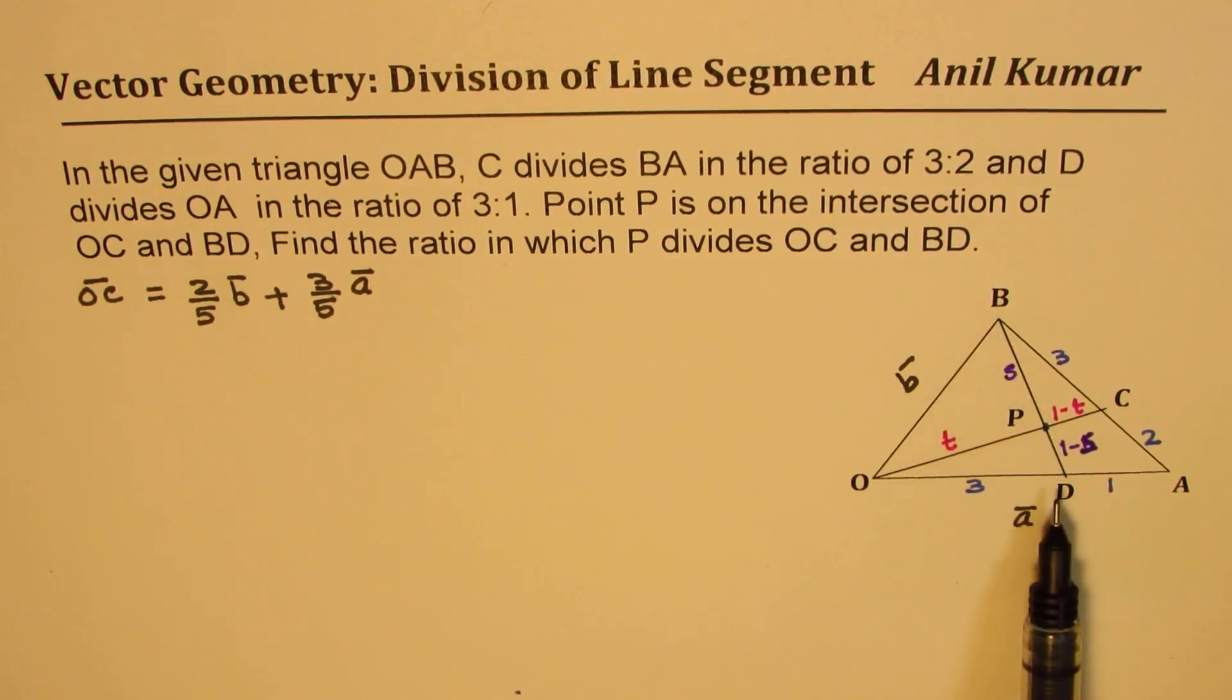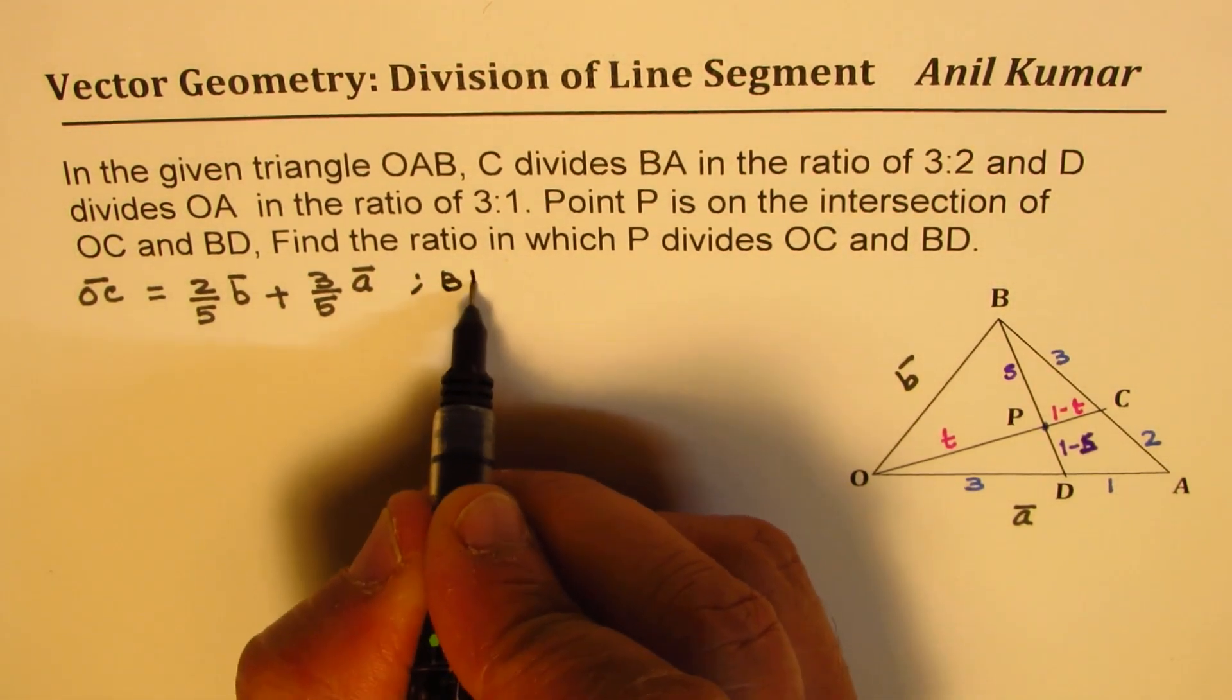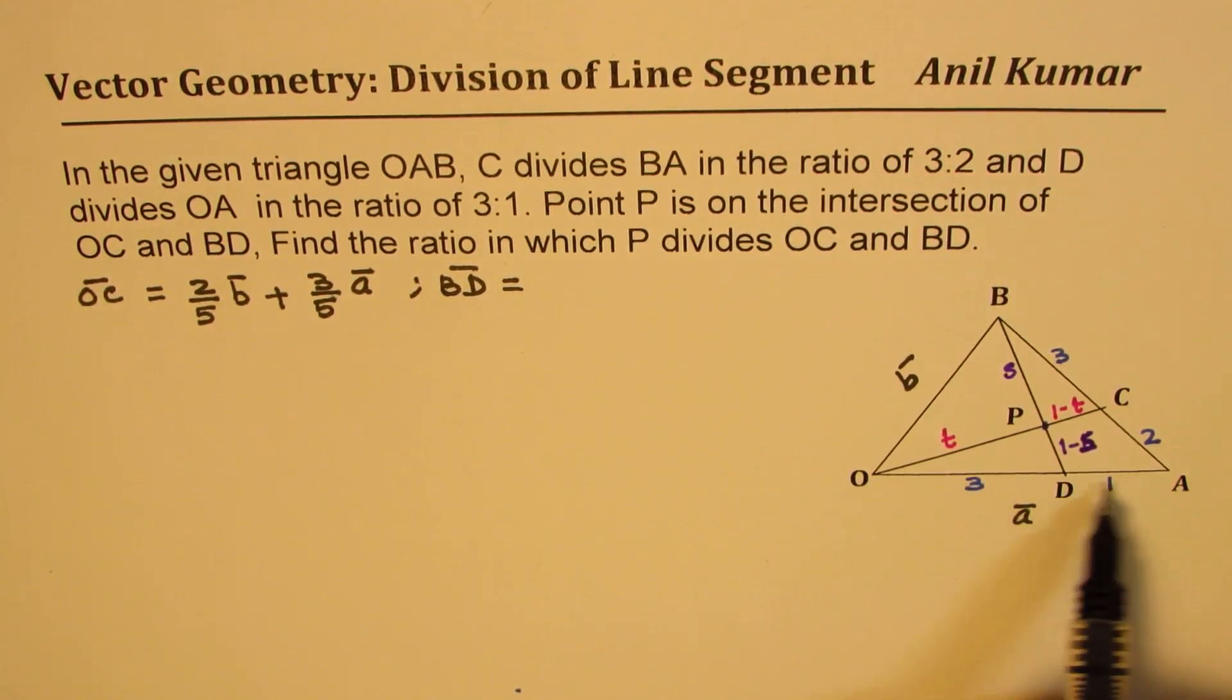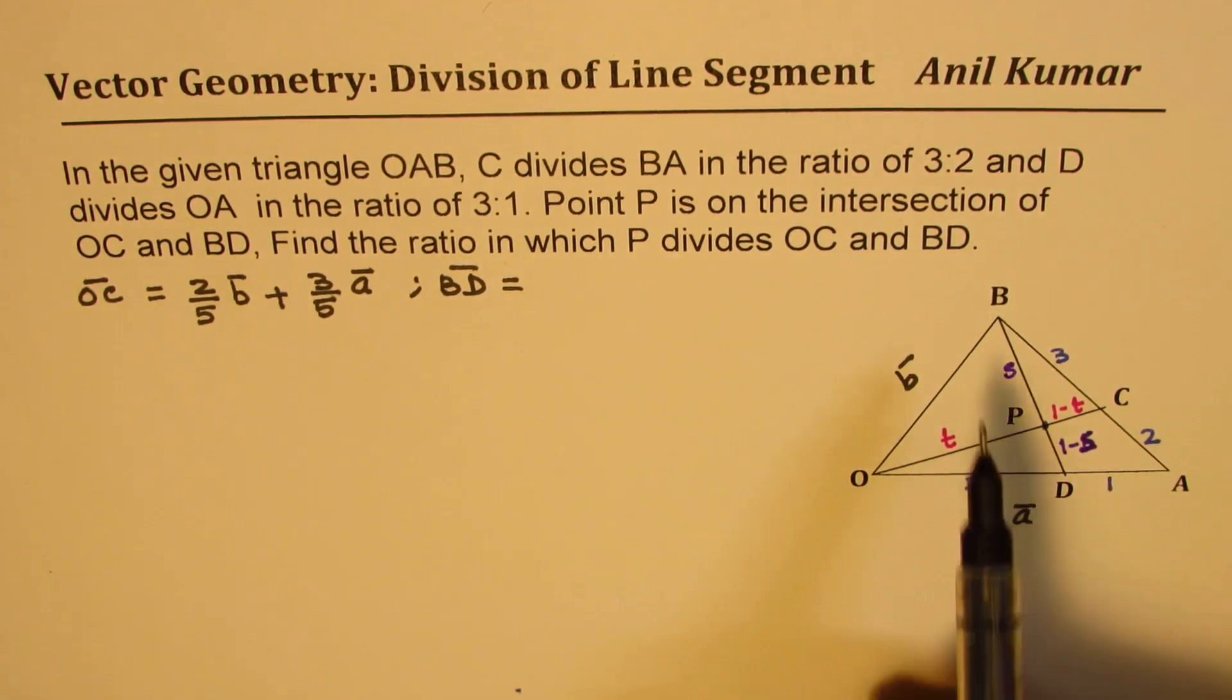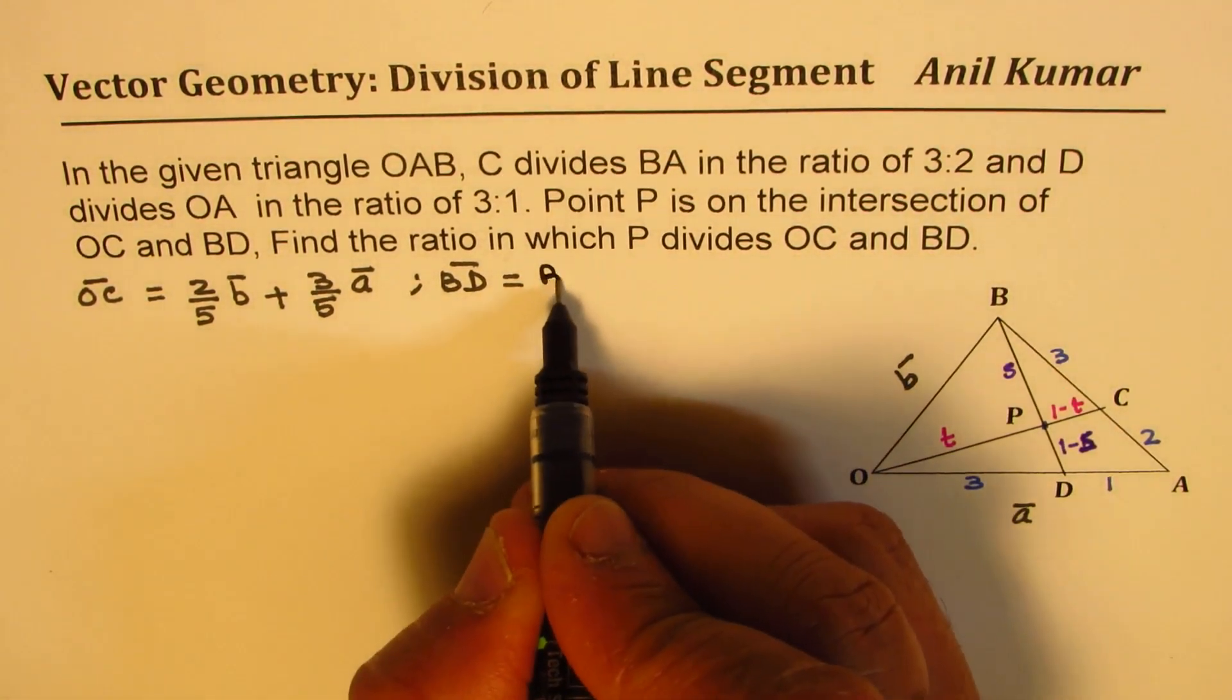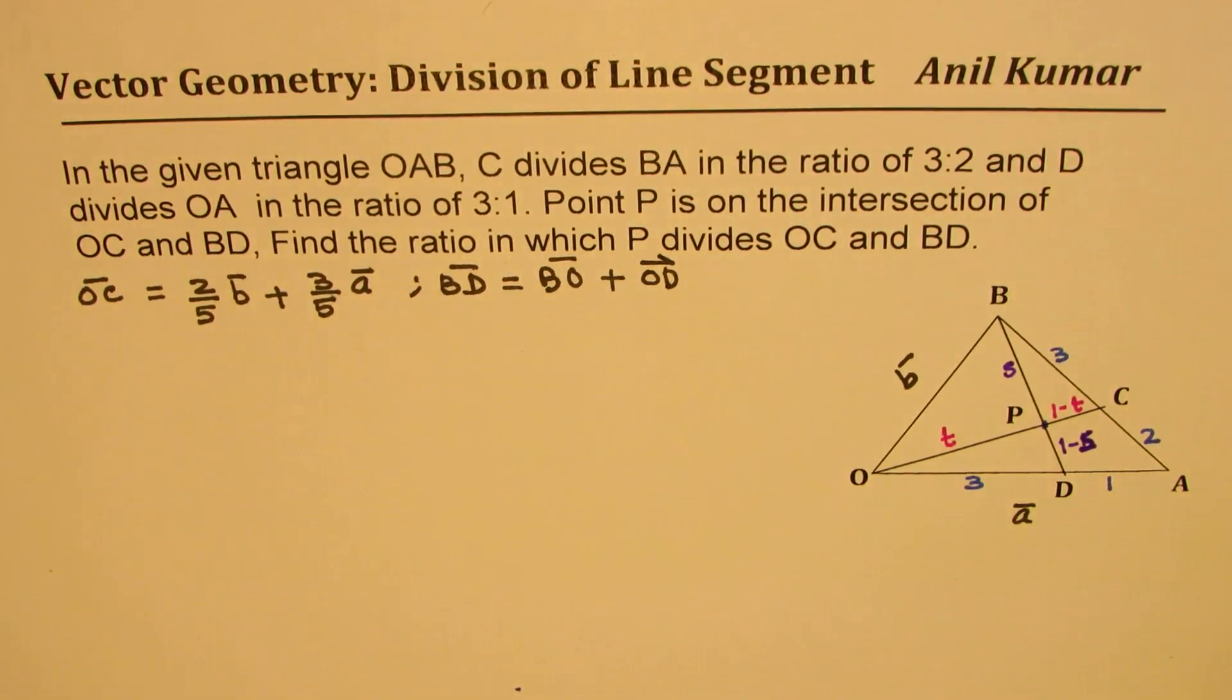We can also find what is BD, right? Now, this is 3 plus 1, 4 in all. So if it is 4 in all, then BD should be 3 times this vector, which is A, right? But we can get BD as a combination of these two. That would be better. So we'll take like this, because A, this is along A itself. So we can say BD is BO plus OD. That is better. Instead of using this formula, this is better.